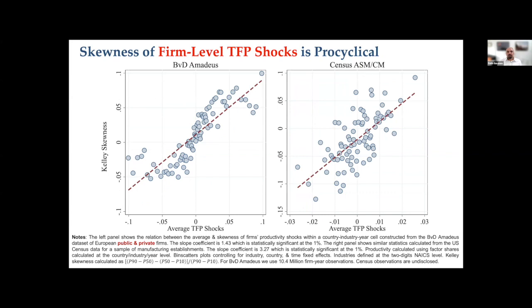Now let's turn to international evidence on TFP shocks, which is the driving process we take as exogenous in many models. The left panel is from Amadeus — international data — and the right panel is for the US from the Survey of Manufacturers. We estimate TFP shocks at the firm level using three different conventional methods, and they all give the same picture: skewness of TFP shocks to firms becomes negative in recessions and positive in expansions.